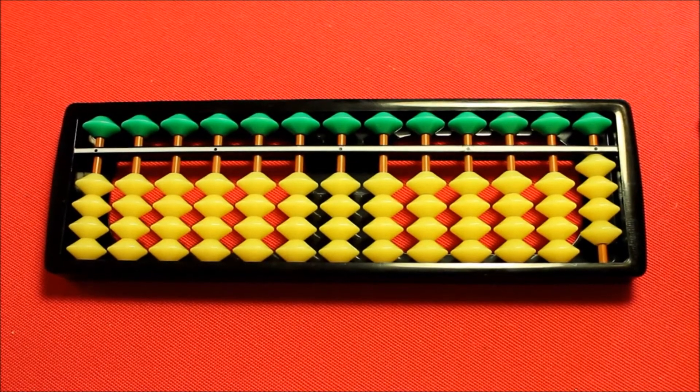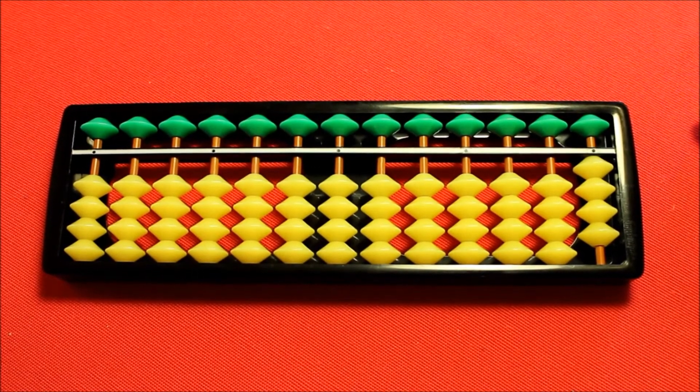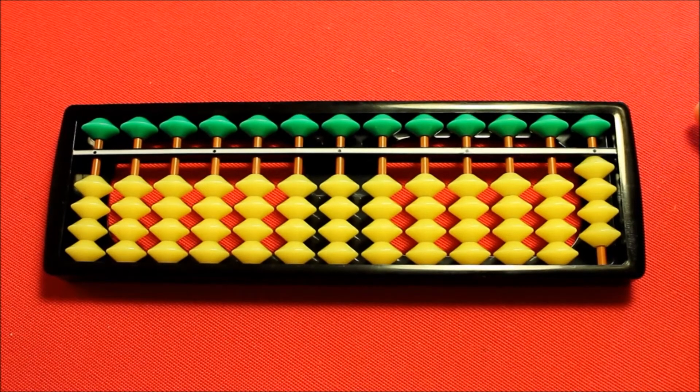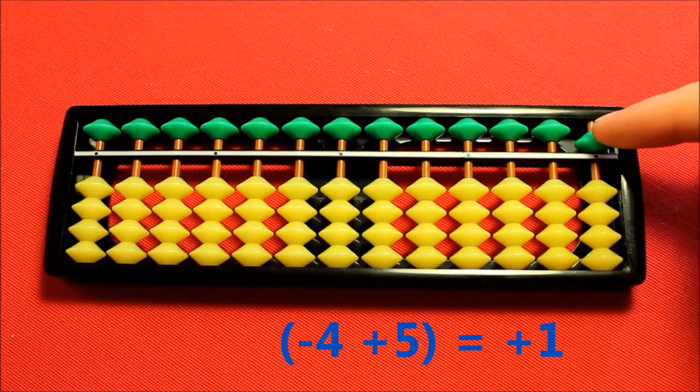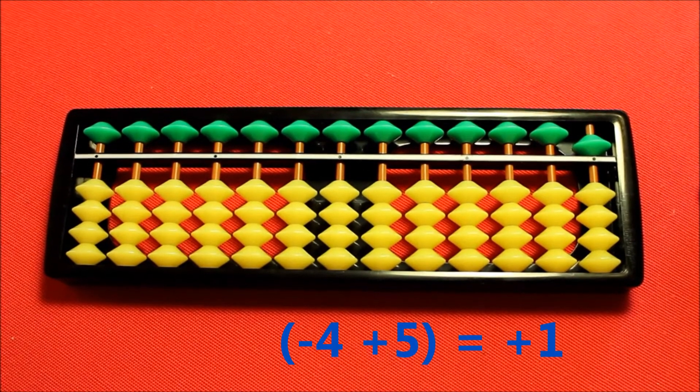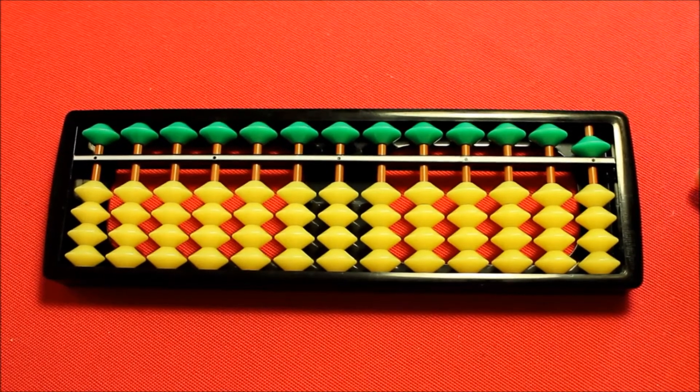But by moving the heavenly bead into place it means I'm going to be adding by five, which is four more than the one I want to add. So firstly I need to subtract four and then when I add my five the net result is that I have added by one and there you go, four plus one equals five.